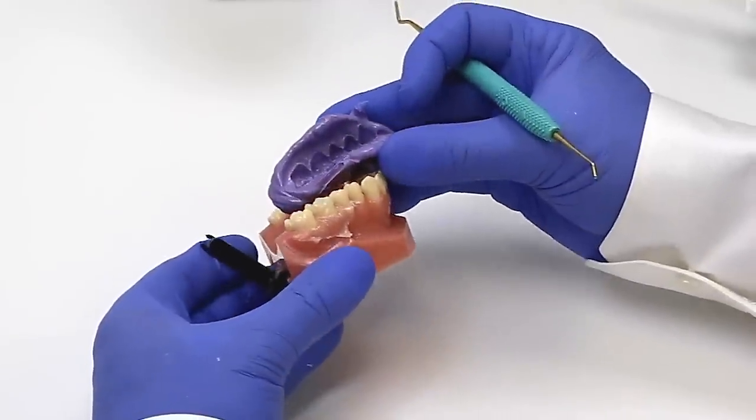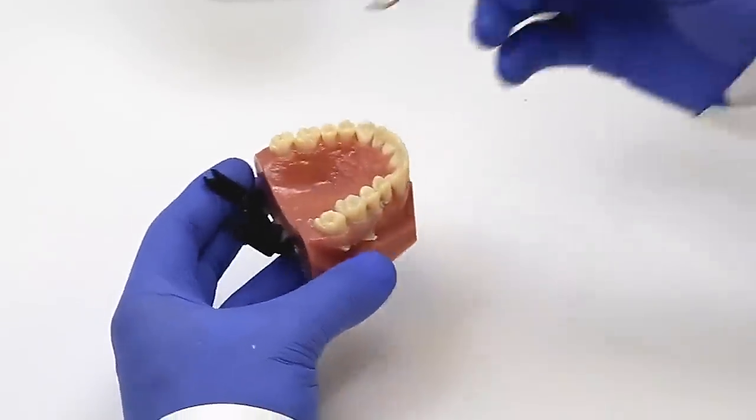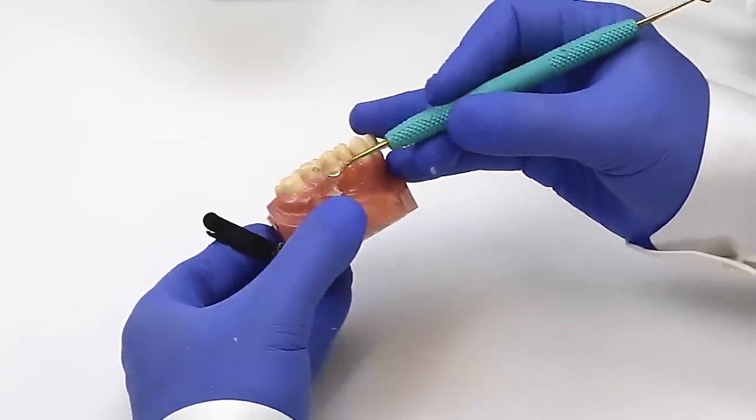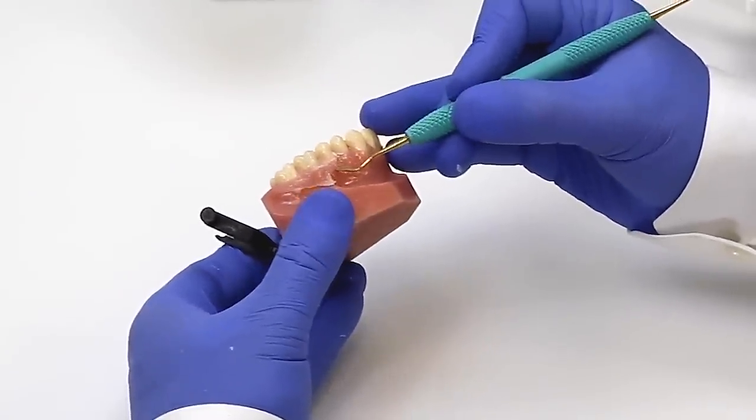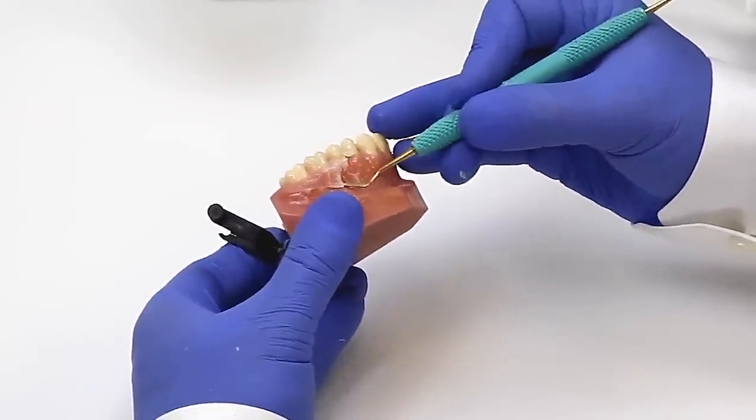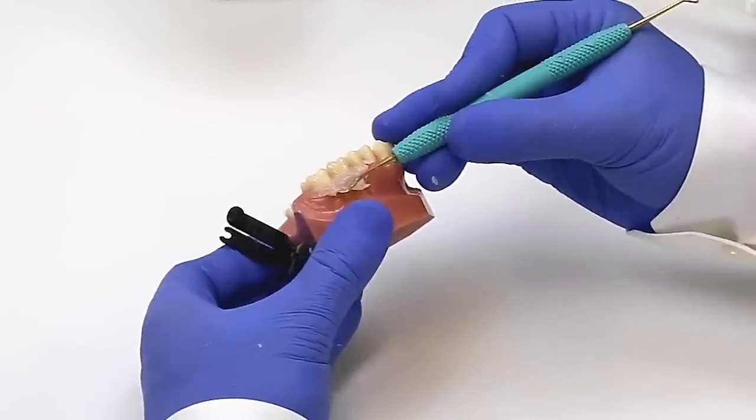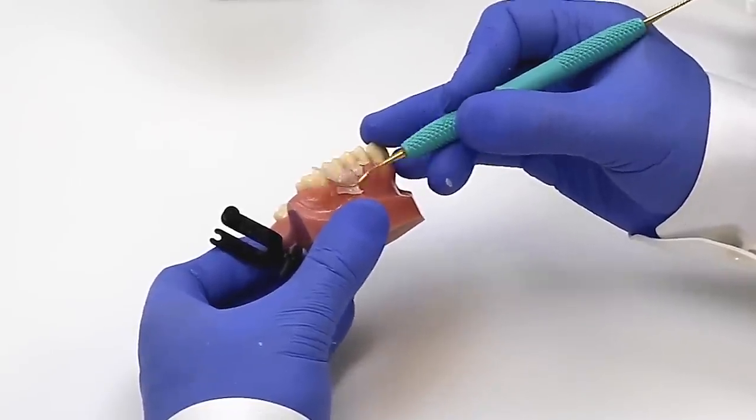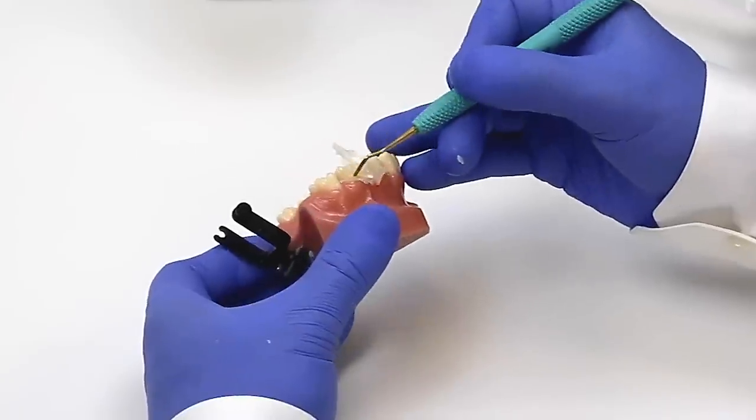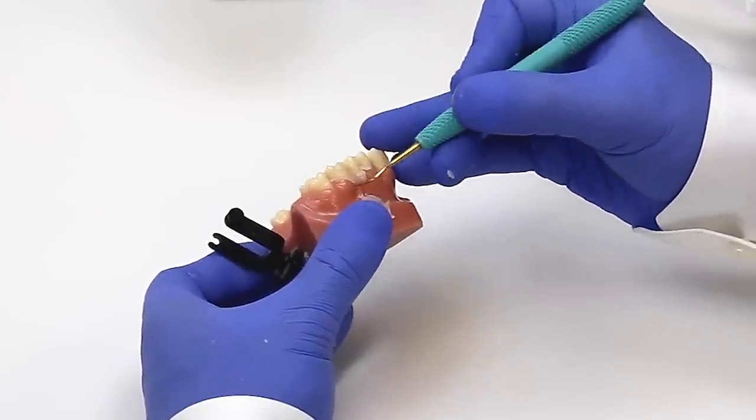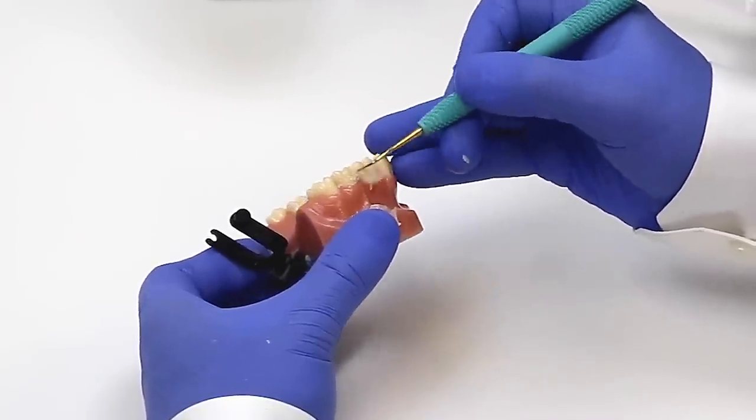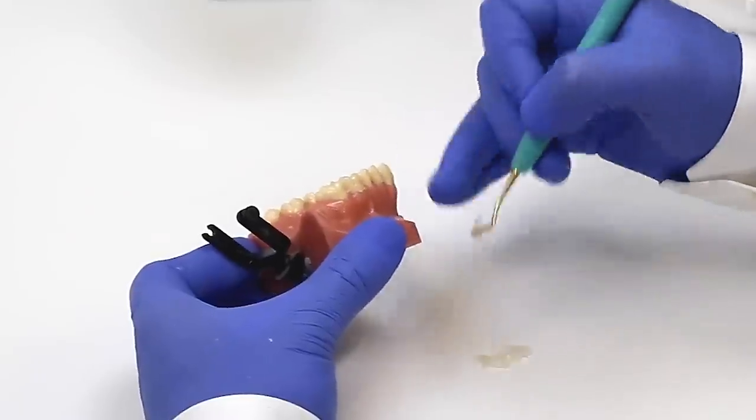We've removed the temporary matrix and what's left behind is a temporary crown. And if you see with the simple use of an instrument, this onion skin excess is removed, breaking off at the margin.